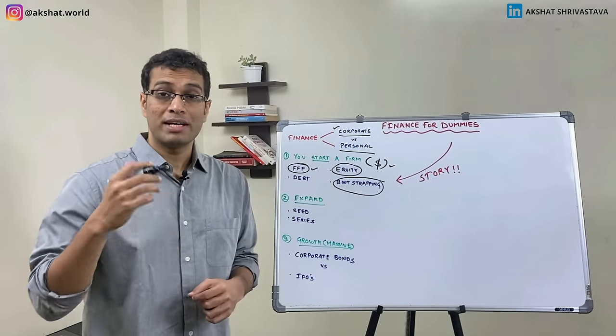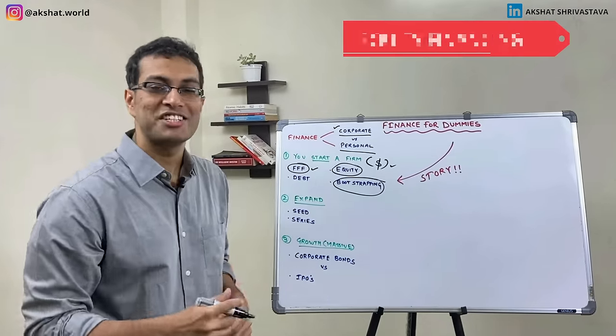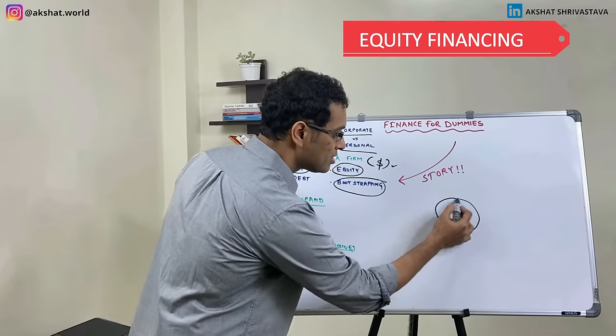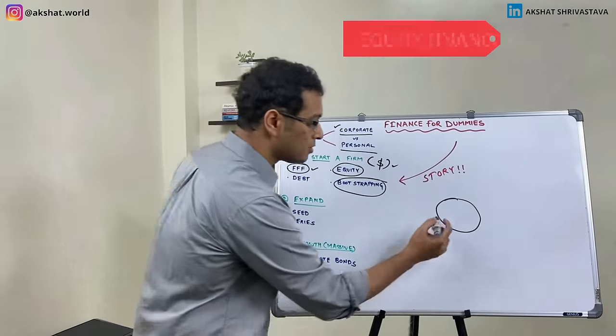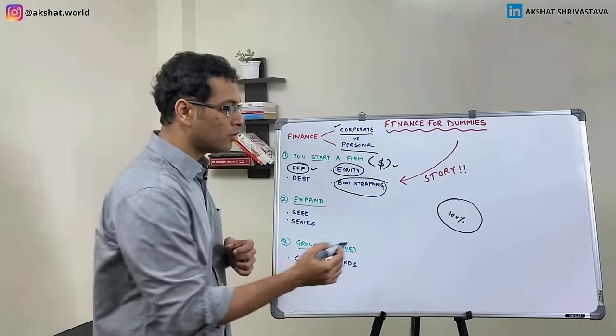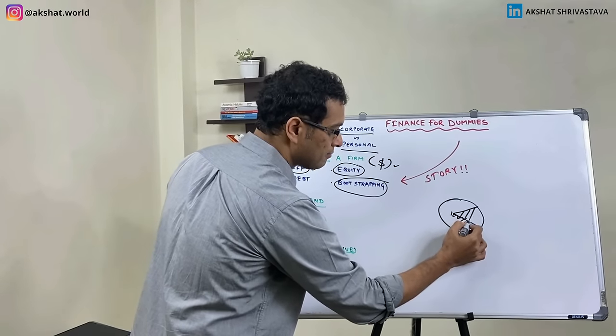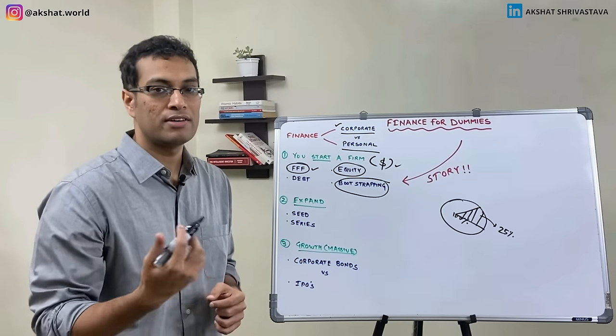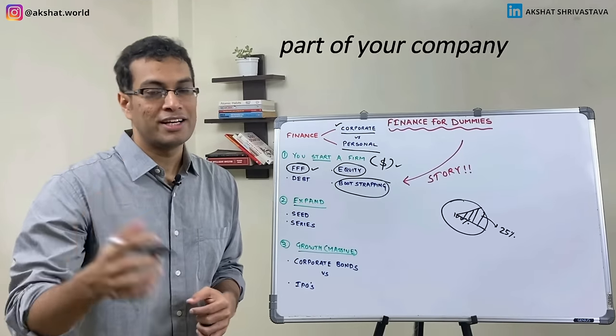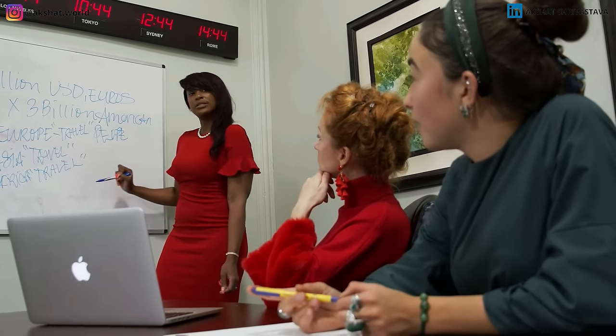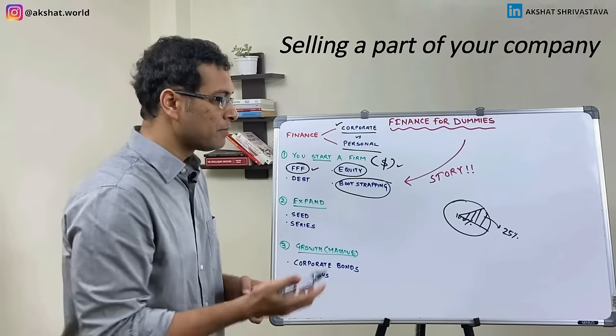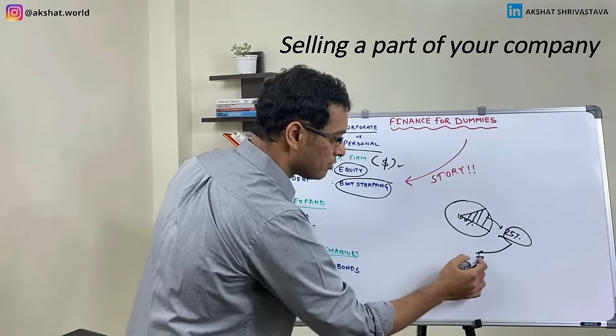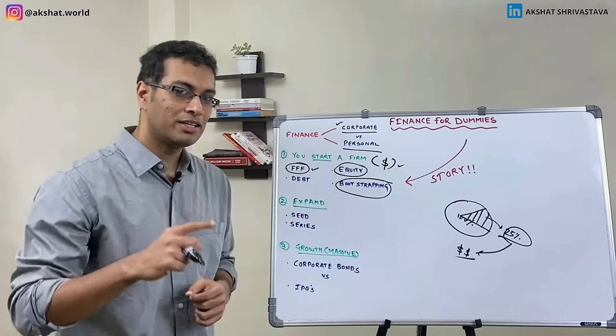The third way in which you can raise money is called equity financing. Now, this is where it starts getting a little bit tricky. So let me explain what equity financing means. Imagine that this is your company. This is like 100% of your company. Now, what you do is that you literally carve out a piece of this pie. So let's imagine this is 25% of your company and then you sell it off to different investors. Now, this could be your friends, this could be VC funds, this could be private equity funds, et cetera. But bottom line is that you lose a certain part of your company. And in return, what do you get? You get money.